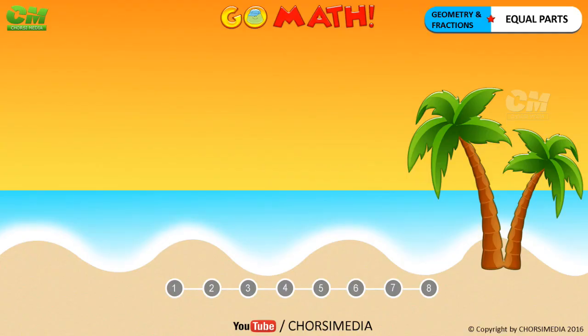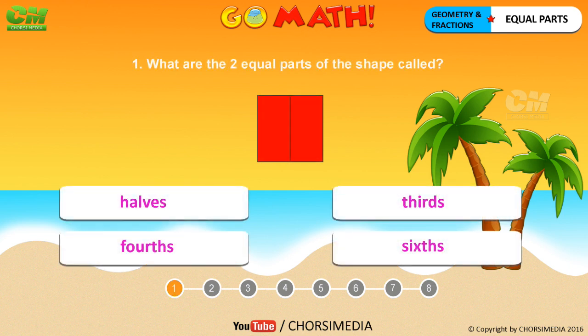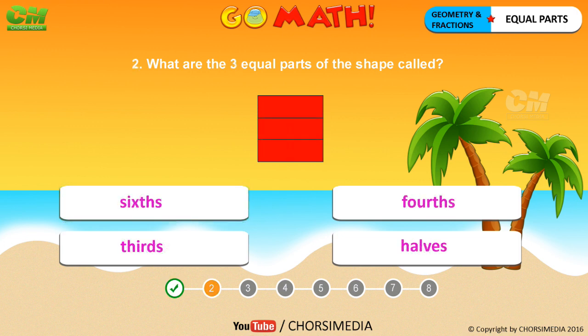Go Math: geometry and fractions — equal parts. What are the two equal parts of the shape called? You are right, the correct answer is halves. What are the three equal parts of the shape called? You are right, the correct answer is thirds.